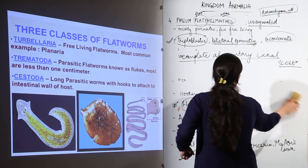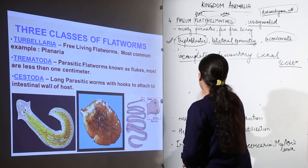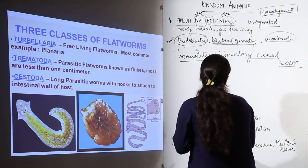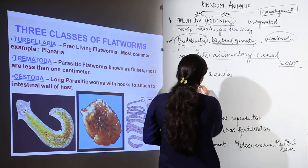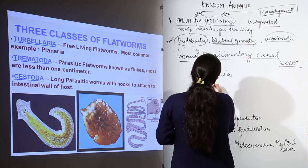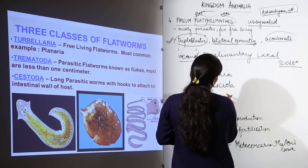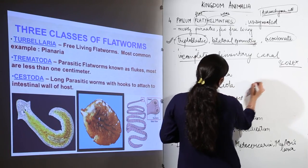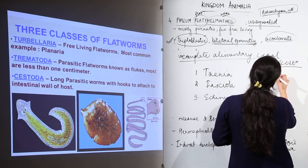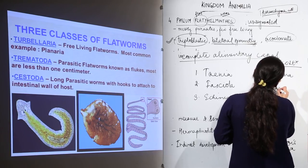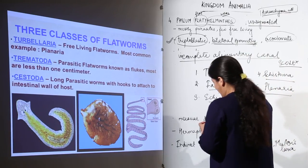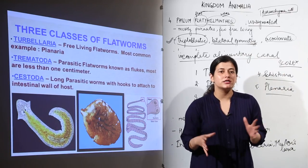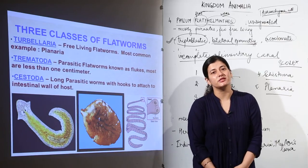The key examples of platyhelminths to remember are: Taenia (the tapeworm, from uncooked pork, with the pig as intermediate host), Fasciola (the liver fluke), Echinococcus, Schistosoma (the blood fluke, found in rice fields), and Planaria. These are the typical and important examples of phylum Platyhelminthes, and their characteristics explain why they are placed in a separate phylum from all other animals studied.